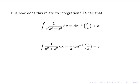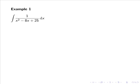But how does this relate to integration? Recall that the integral of 1 over the root of a squared minus x squared dx equals sine inverse of x over a plus c, and that the integral of 1 over x squared plus a squared dx equals 1 over a times tan inverse of x over a plus c. Hence let's consider the integral of 1 over x squared minus 8x plus 25.